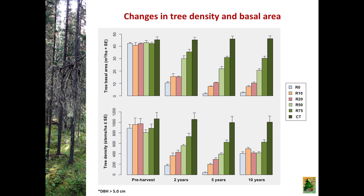Here we have graphs with time periods on the x-axis — pre-harvest, 2 years, 5 years, and 10 years after harvest. The top figure shows tree basal area and the bottom shows tree density, with different bars for different treatments from clear-cuts to unharvested controls. Pre-harvest there's no treatment effect, but once harvesting prescriptions are applied, you see a clear treatment effect on basal area, with a progression corresponding to the level of retention applied.